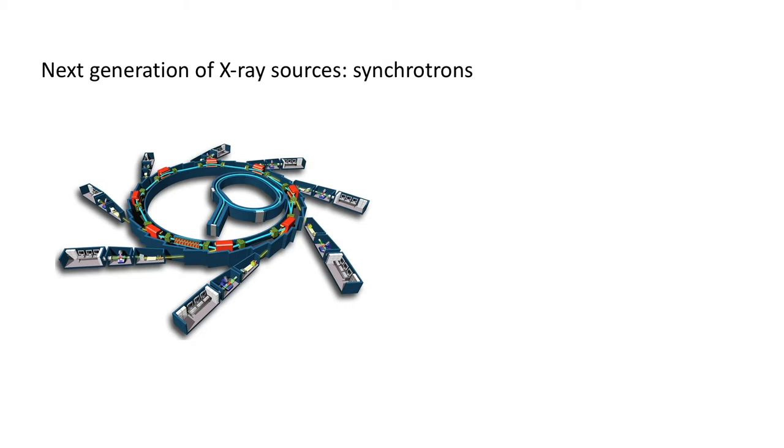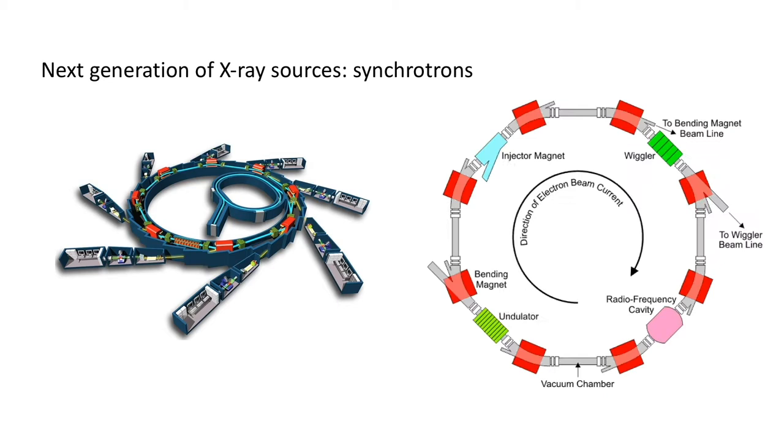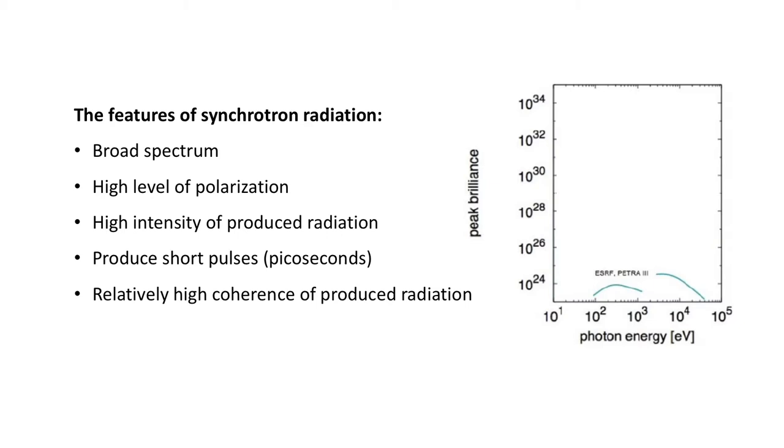The main improvements in the production of X-ray beams came first with synchrotrons. In synchrotrons, charged particles move in large rings. Periodically, these particles are subject to radial acceleration due to bending magnets. The accelerated charged particles then emit electromagnetic radiation, which can be used for experiments. Synchrotron radiation is characterized to have broad spectrum, high level of polarization, high intensity of produced radiation, and relatively high coherence of produced radiation.